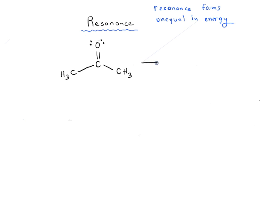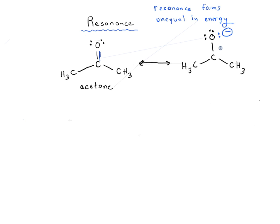Let's go through an example of a molecule with resonance forms that are unequal in energy. This molecule is called acetone, or 2-propanone. We're going to arrange the pi electrons slightly differently — taking the pi bond between carbon and oxygen and moving that pair of electrons up to the oxygen. If you're familiar with formal charge, you'll know that oxygen with three lone pairs will have a formal charge of minus one, with a single bond, and the carbon will have a formal charge of plus one. So these are different resonance forms.